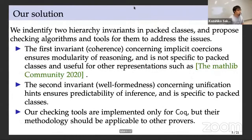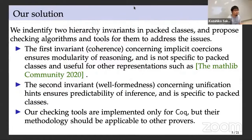Our solution is to identify two hierarchy invariants in packed classes and propose checking algorithms and tools for them. The first invariant concerning implicit coercions ensures modularity of reasoning and is not specific to packed classes, so it is useful for other representations. The second invariant concerning unification hints ensures predictability of inference and is specific to packed classes. Our checking tools are implemented for Coq, but the methodology and algorithms should be applicable to other provers.